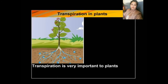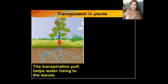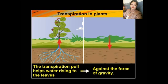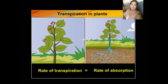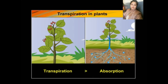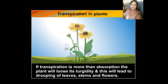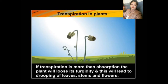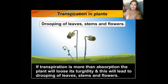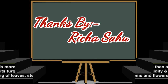Transpiration is very important to plants, as the transpiration pull helps water rise to the leaves against the force of gravity. The rate of transpiration increases with the rate of absorption. If transpiration is more than absorption, the plant will lose its rigidity, leading to drooping of leaves, stems, and flowers. Thanks children.